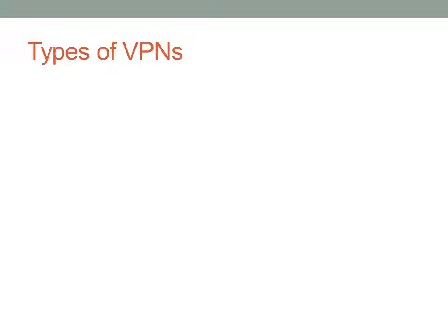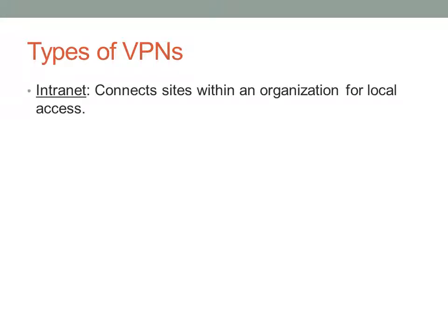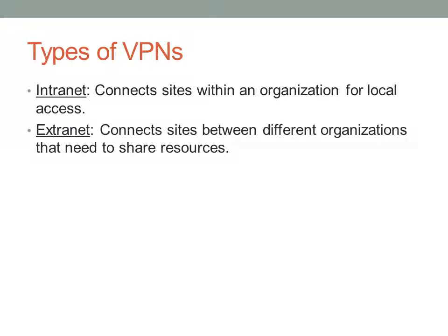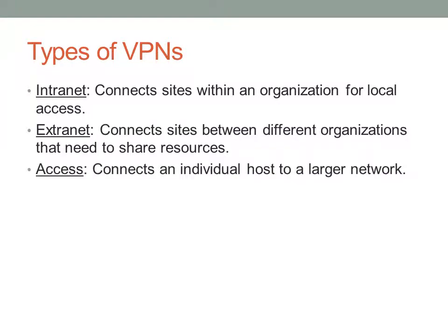There are different types of virtual private networks. An intranet will connect sites within an organization for local access. An extranet will connect sites between two different organizations. And an access VPN is going to connect an individual host to a bigger network.